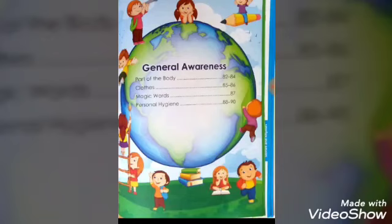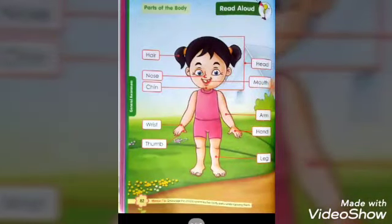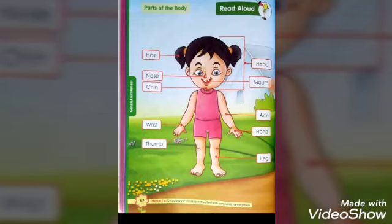Four topics are here: Part of the Body, Clothes, Magic Words, Personal Hygiene. Today we will complete our first topic, that is Part of the Body. Take out page number 82. In this session you will identify the different body parts. As you can see, one girl is here and body parts are also mentioned. You have to speak with me and whatever body part I show you, you have to touch your body part also.